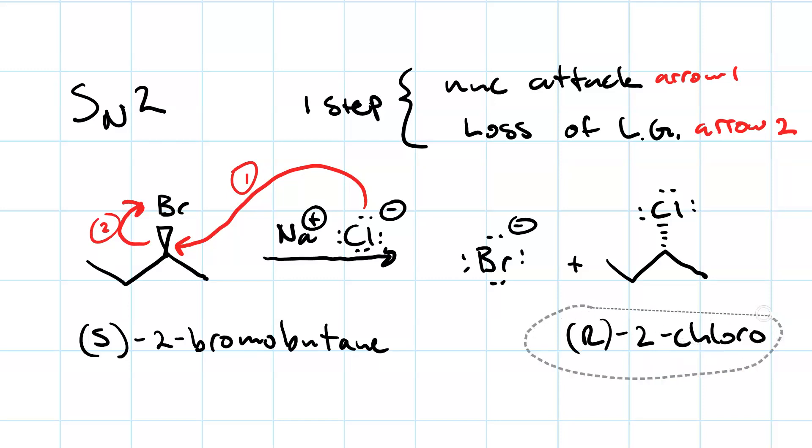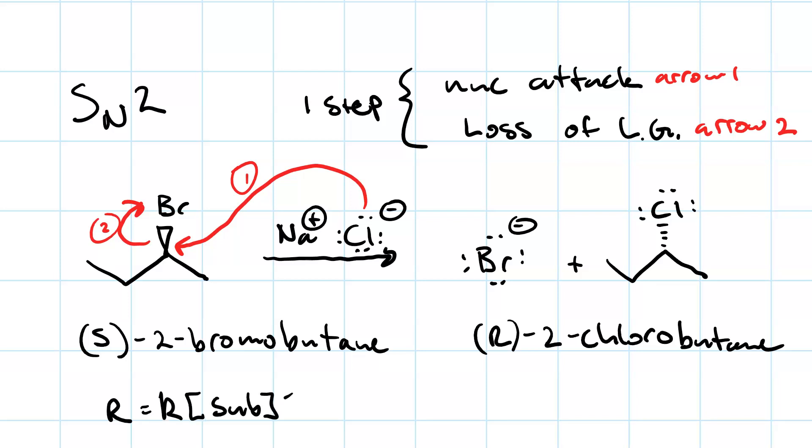Our rate limiting step is bimolecular. It depends on the concentration of both the substrate, so R equals K times the concentration of substrate times the concentration of our nucleophile. That's bimolecular, which is why we have SN2.